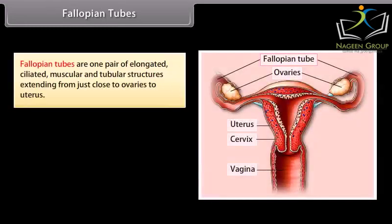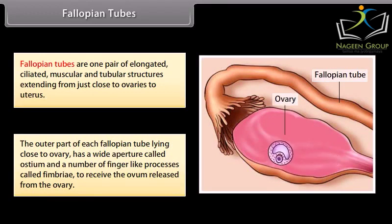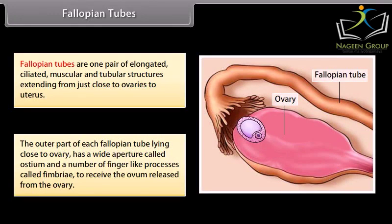Fallopian tubes are one pair of elongated, ciliated, muscular and tubular structures extending from just close to the ovaries to the uterus. The outer part of each fallopian tube, lying close to the ovary, has a wide aperture called the ostium and a number of finger-like processes called fimbriae, to receive the ovum released from the ovary.